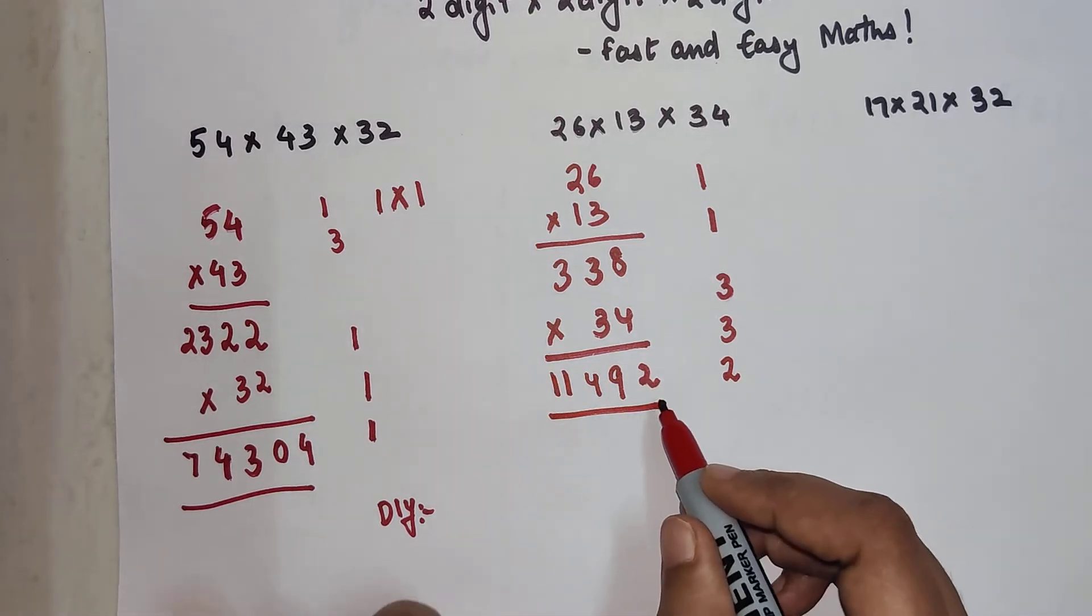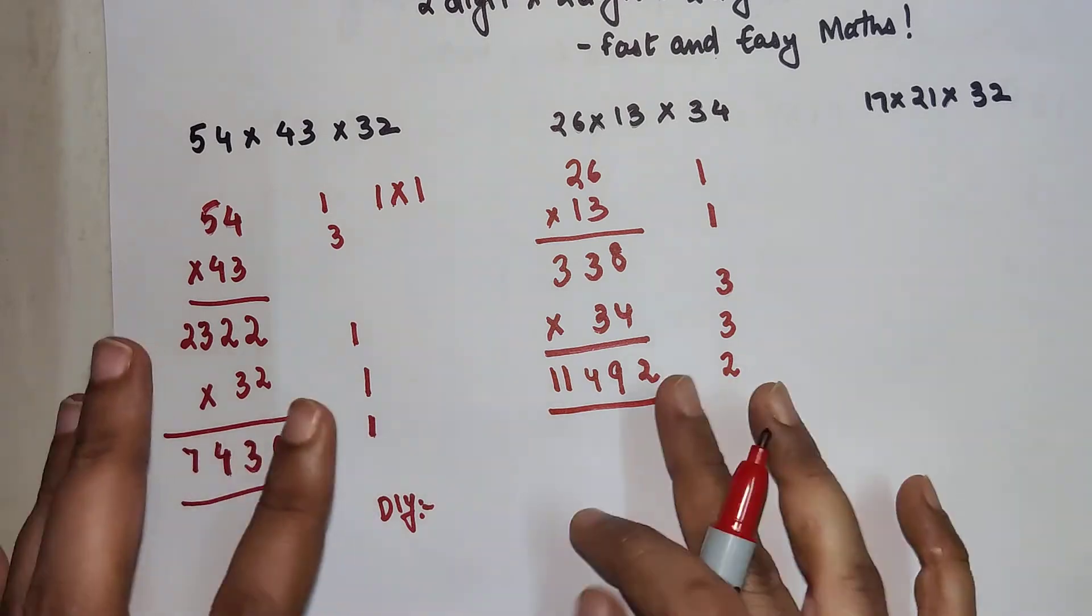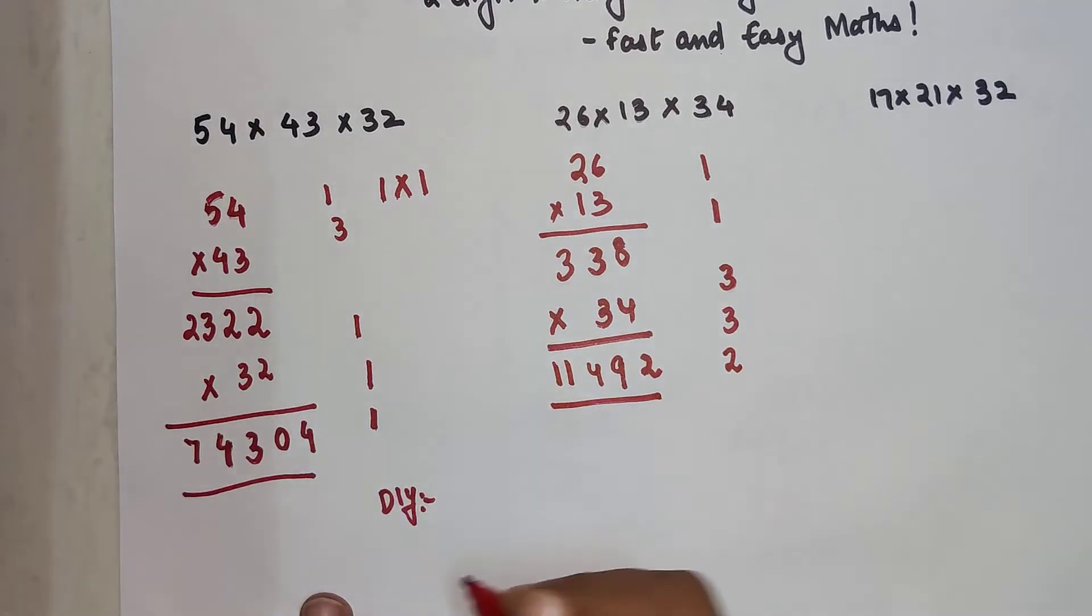Then we have 3 into 3 which is 9 plus 2 gets you 11. So my final answer for this one is 11, 4, 9, 2.